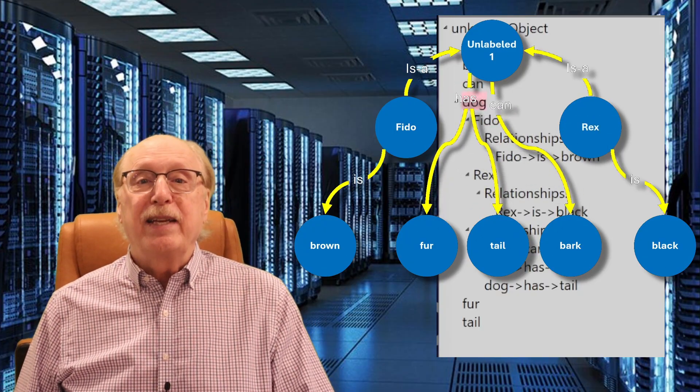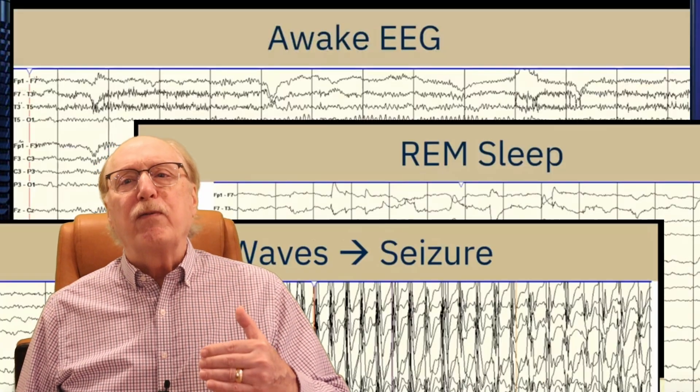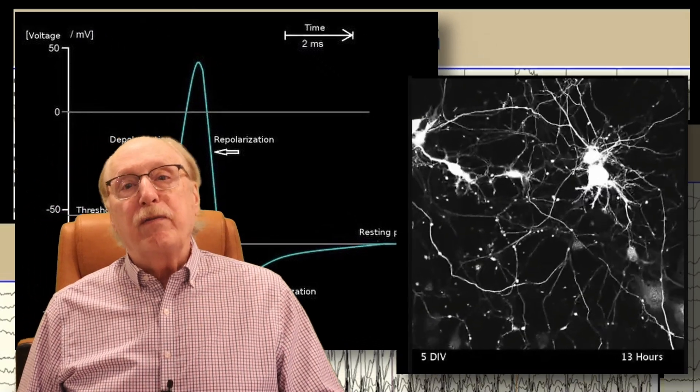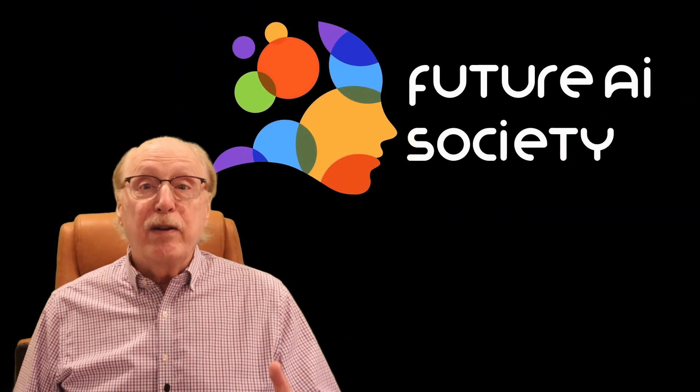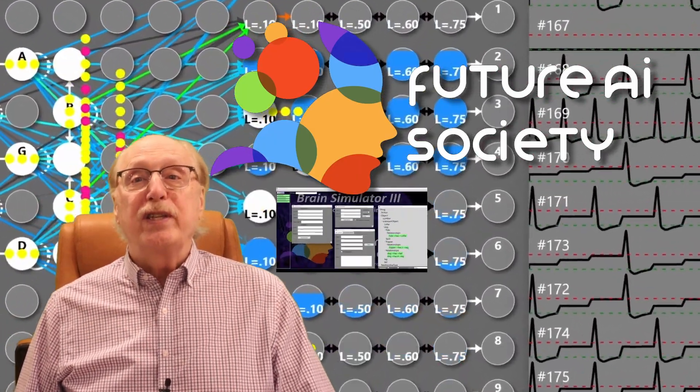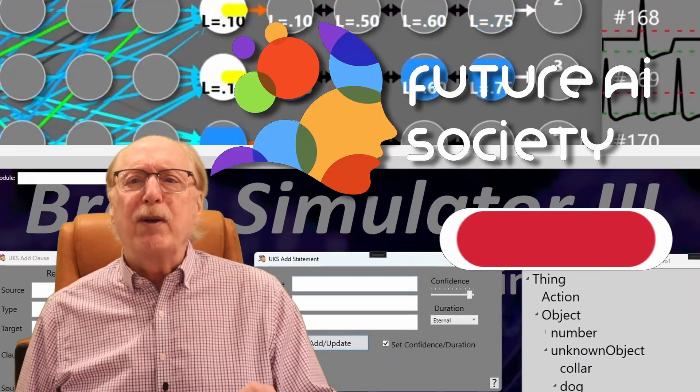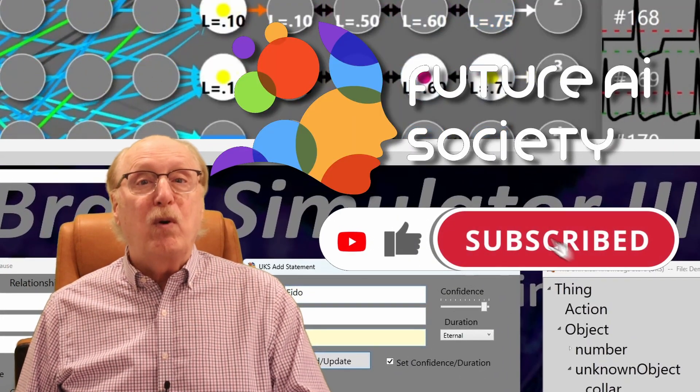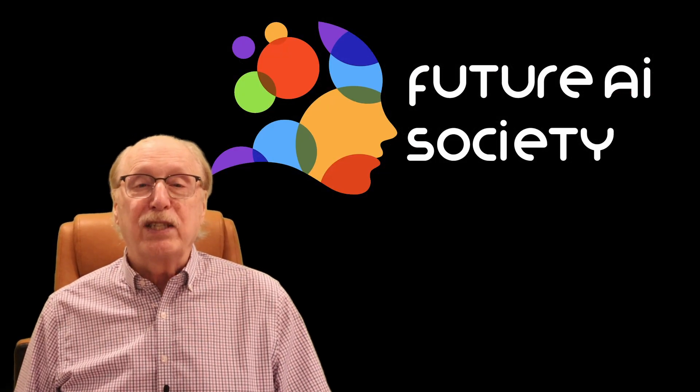I'm Charles Simon, long-time AI researcher, software developer, and manager. Beyond AI, I've developed software for neurological test instruments and neural simulators. I created the Future AI Society to explore how neuroscience can inform smarter, more human-like AI. If you are interested in this type of content, be sure to like, subscribe, and ring the notification bell, because the YouTube algorithm won't surface videos like this unless you ask for them.